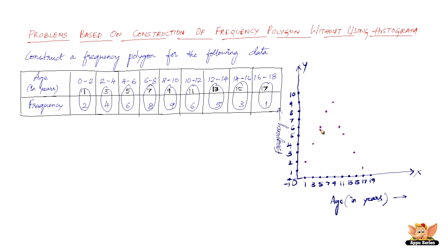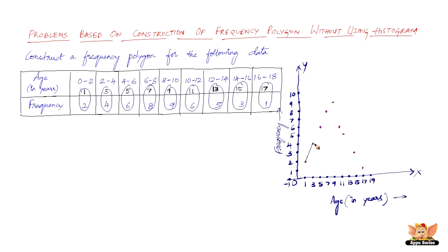Now let us join these points by using line segments. This one should go and join 19 because that's the midpoint of the next class interval. This one is going to go and join minus 1, because that's the midpoint of the imagined class interval.